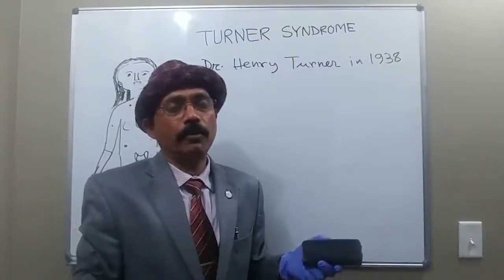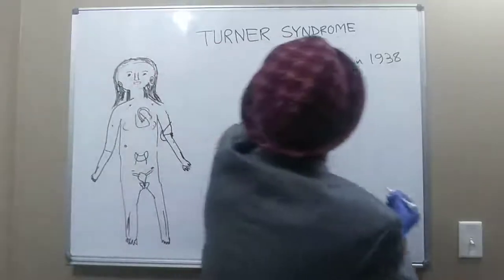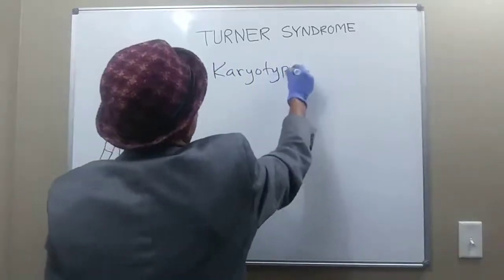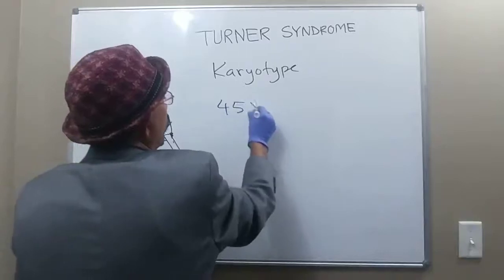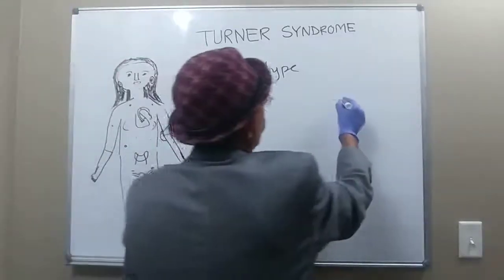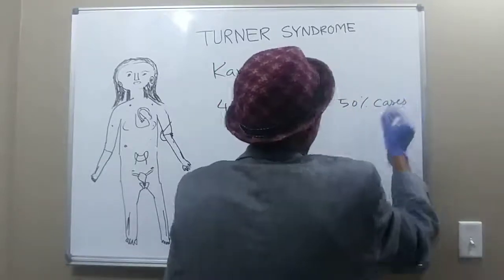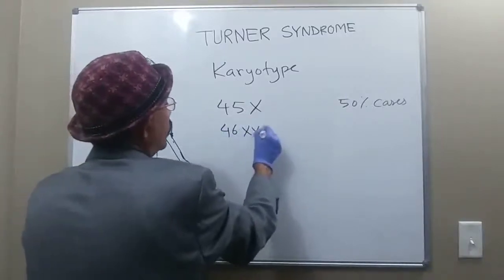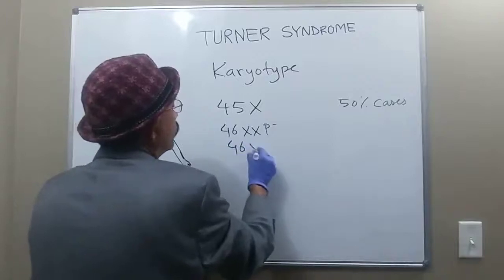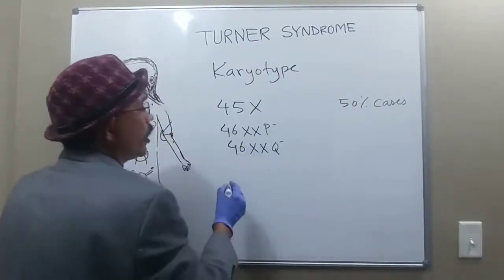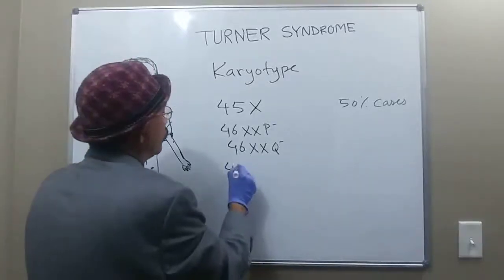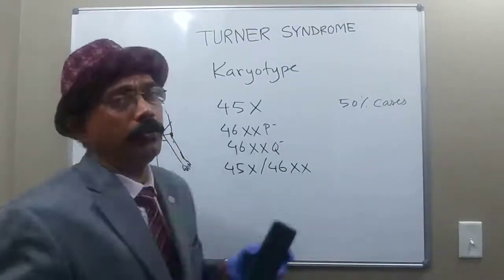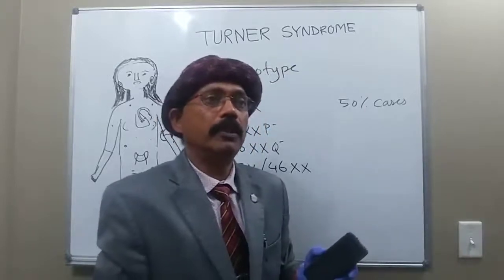What is the karyotype of a patient with Turner syndrome? The most common karyotype is 45X, seen in around 50% of cases. We may also have 46XX minus, 46XXq minus, mosaics such as 45X/46XXq minus or 45X/46XX, and isochromosome variants.